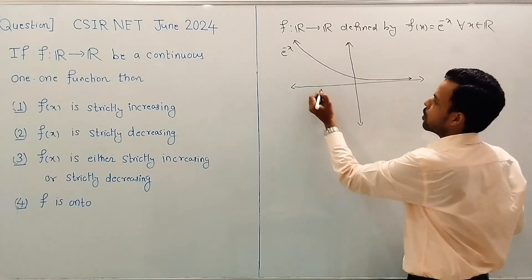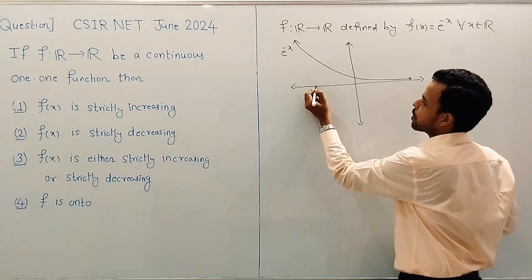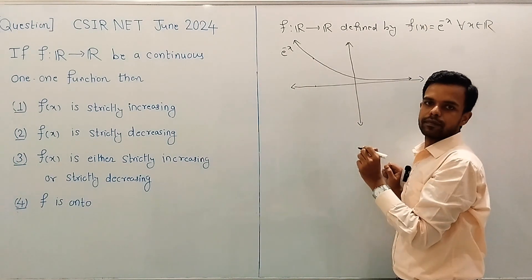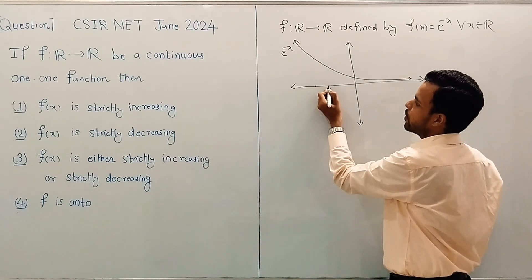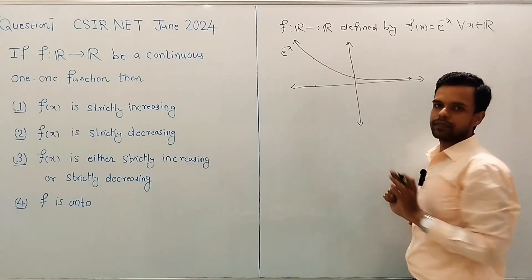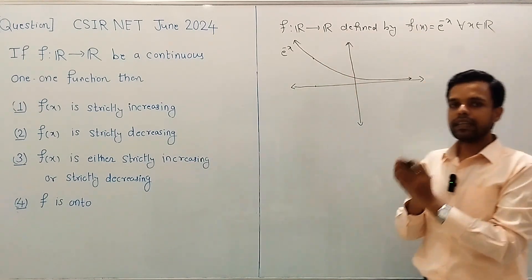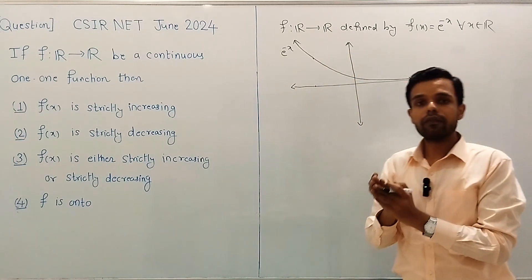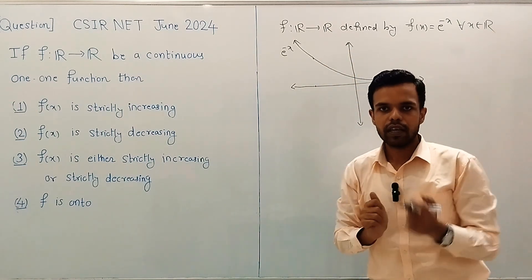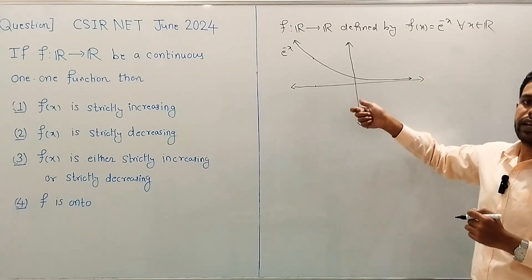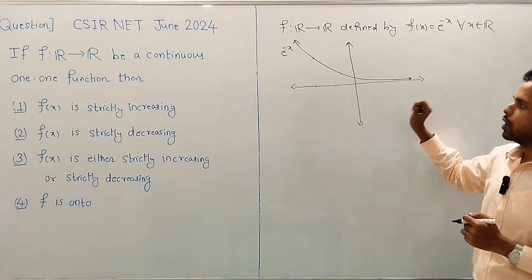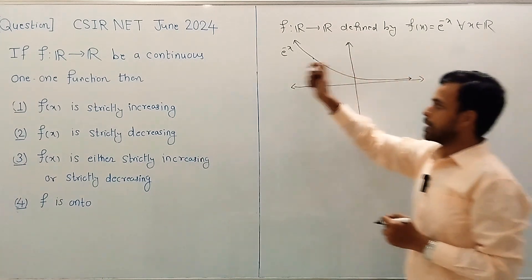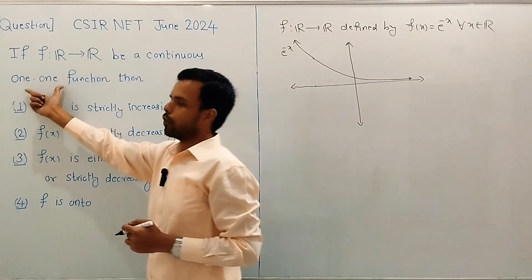Moreover, for every real number there corresponds exactly one point on the graph, so distinct real numbers have distinct images. From the graph it is clear that f(x) = e^(−x) is a one-one, that is injective, function. You can also easily prove this by the definition of one-one. So f(x) = e^(−x) is a continuous one-one function.